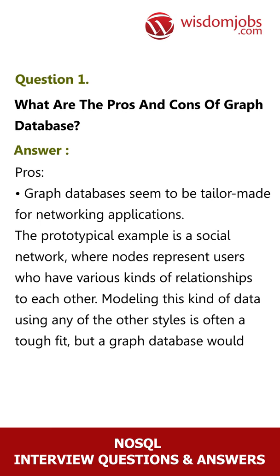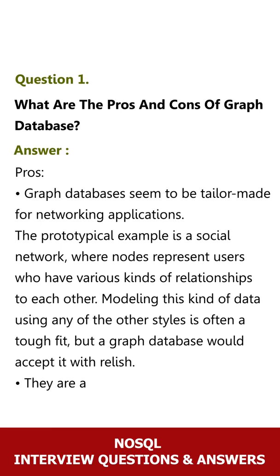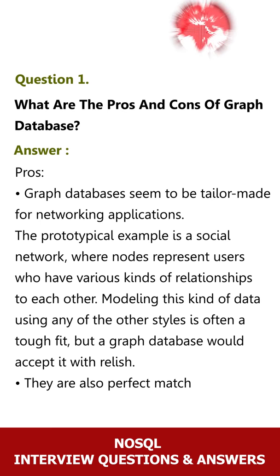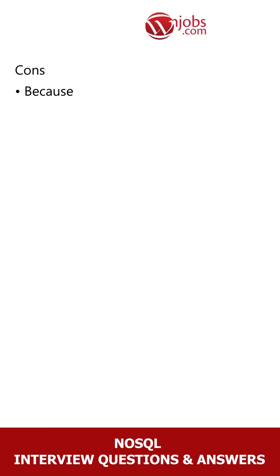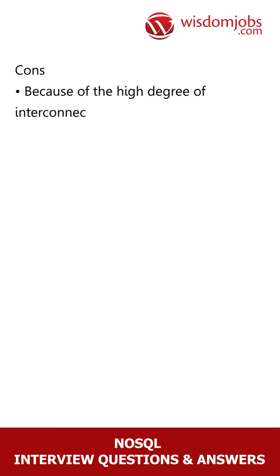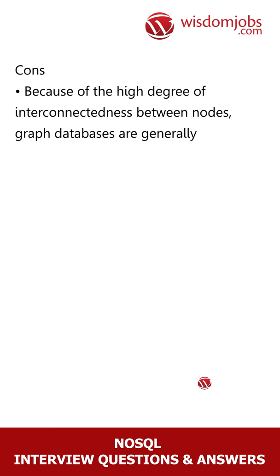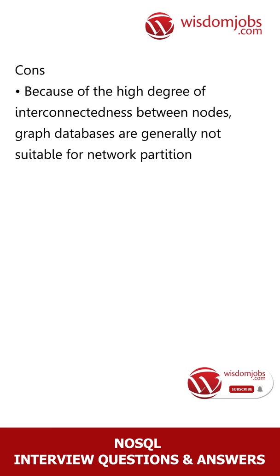A graph database would accept it with relish. They are also perfect matches for an object-oriented system. Cons: Because of the high degree of interconnectedness between nodes, graph databases are generally not suitable for network partitioning. Graph databases don't scale out well.